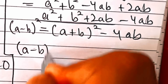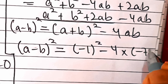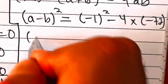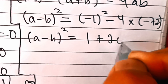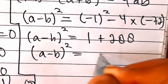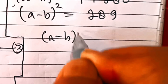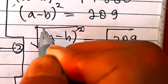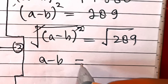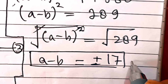So a minus b whole squared equals minus 1 squared minus 4 times minus 72. That is 1 plus 288, which equals 289. Applying square root on both sides, a minus b equals plus or minus 17. Let's call this equation 6.